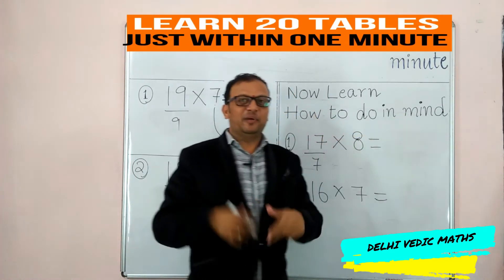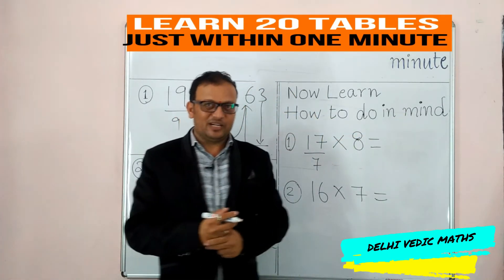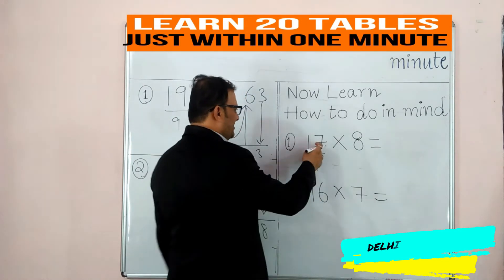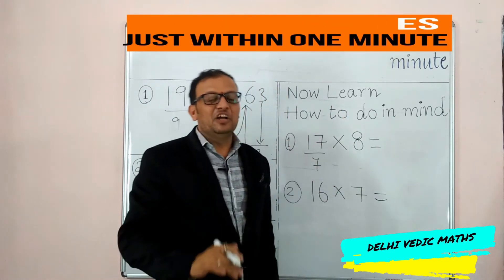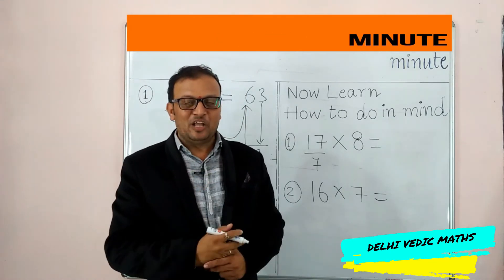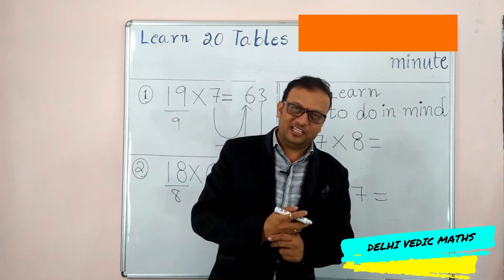How to do in mind. How to do the 7th table. You will give the 7 table. 7×8 is 56. Your 9th is 56, the 6th is 56.